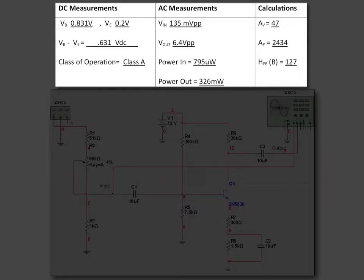To summarize what we did with Multisim, we took DC measurements and AC measurements, and then we made some calculations. The DC measurements we took were VB at 0.831 volts and VE at 0.2 volts. So those are at the base and the emitter.